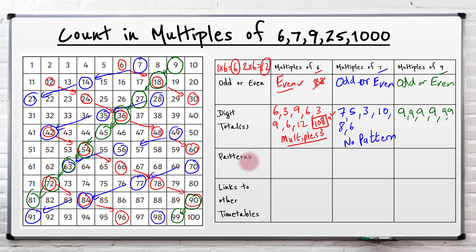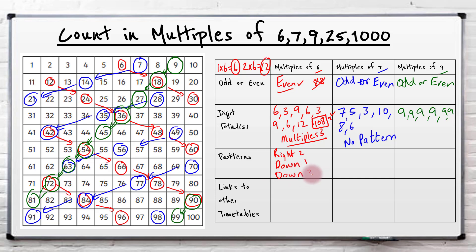And let's see if we can find any patterns now for each of these. The pattern we notice diagonally for the 6's - it goes right 2, then down 1. So that is a really useful pattern. Or if we're going down, we go down 1, 2, 3 - so down 3 as well is another pattern. So we've got two patterns for the 6 times tables on the 100 grid, which is helpful.